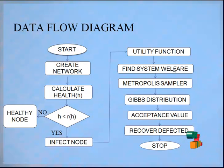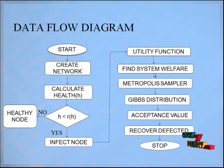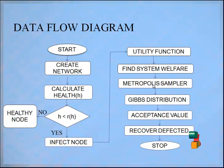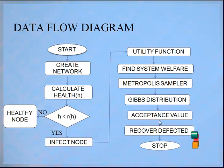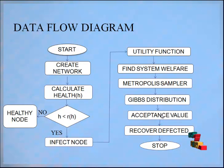The utility function of each infected node is calculated. The utility value of the infected node and helper are computed, then system welfare values are found for each infected node. The Metropolis sampler distributed algorithm finds the Gibbs distribution value for encountered infected nodes, then calculates the acceptance value of each infected node, choosing the minimum value among one and the Gibbs distribution value.